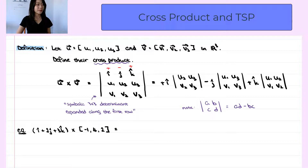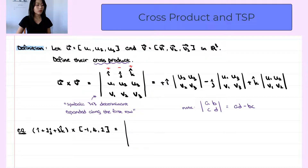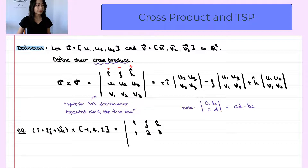Now let's look at this example. It is a cross product in R3. So first of all, we are going to write the cross product as a 3 by 3 determinant. First row is i hat, j hat, and k hat. Second row is the components of the first vector: i hat plus 2j hat plus 3k hat, so the components are 1, 2, and 3. In the last row, we put the components of the second vector: negative 1, 4, and 2.